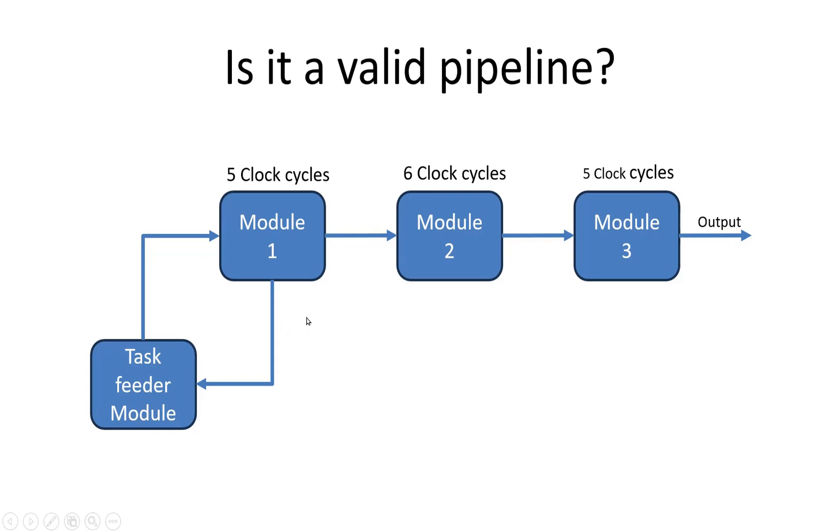The problem statement was: there are four modules in the design - task feeder module, module 1 which takes 5 clock cycles to complete the task, and module 2 which takes 6 clock cycles to complete the task.